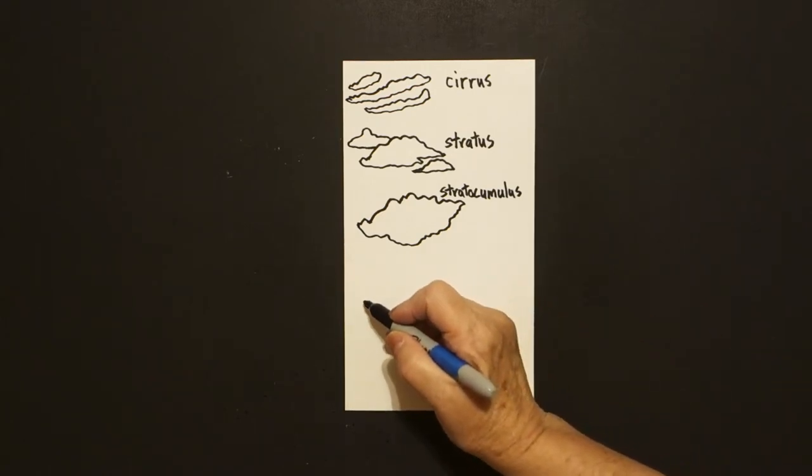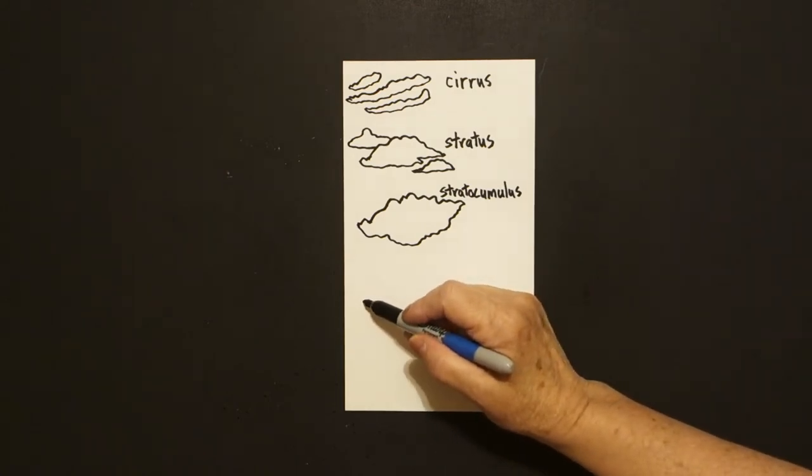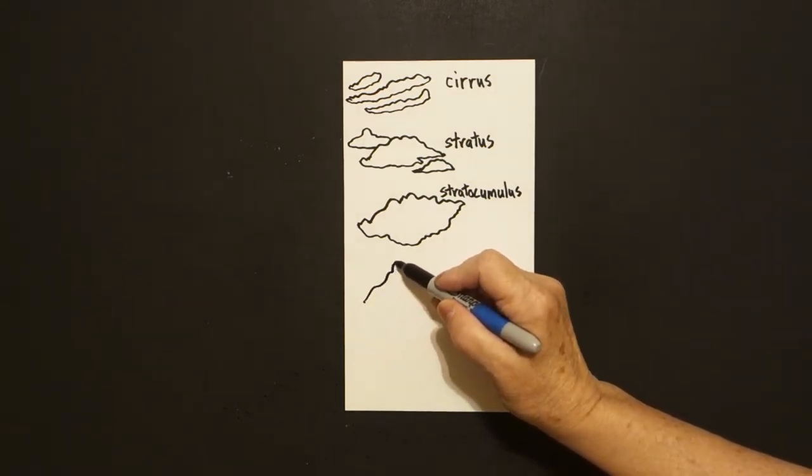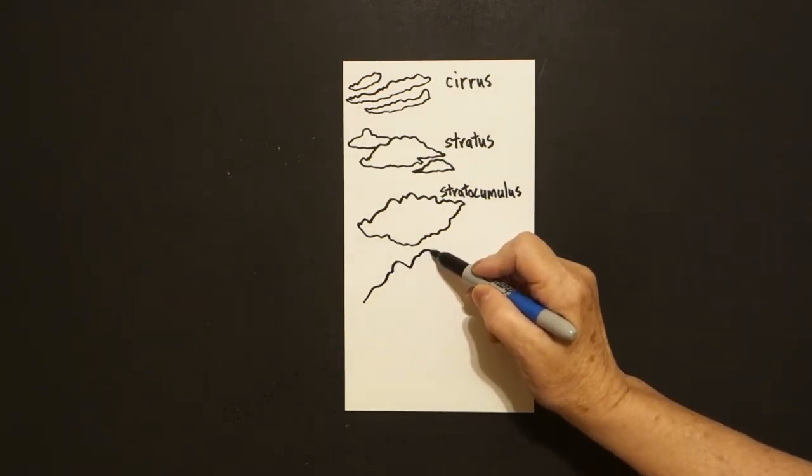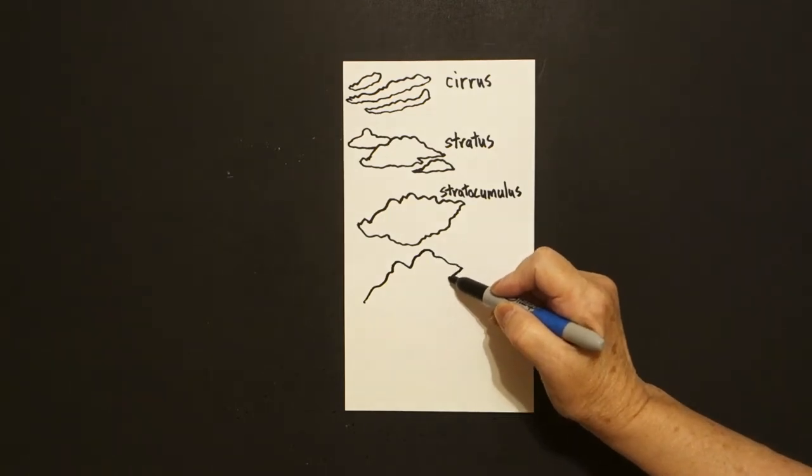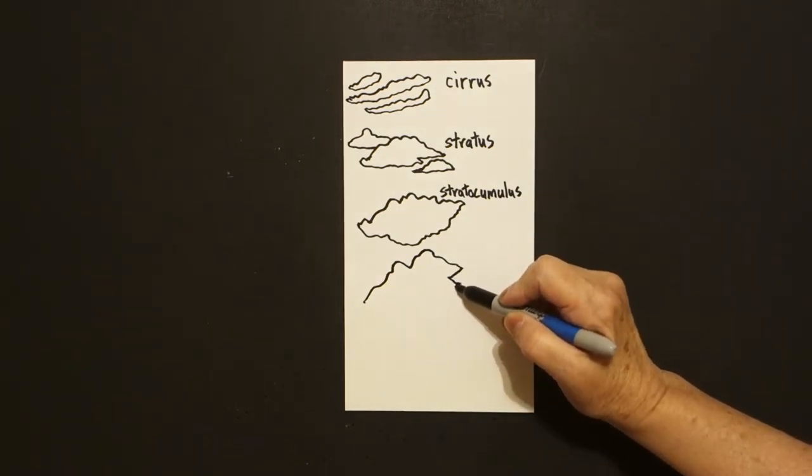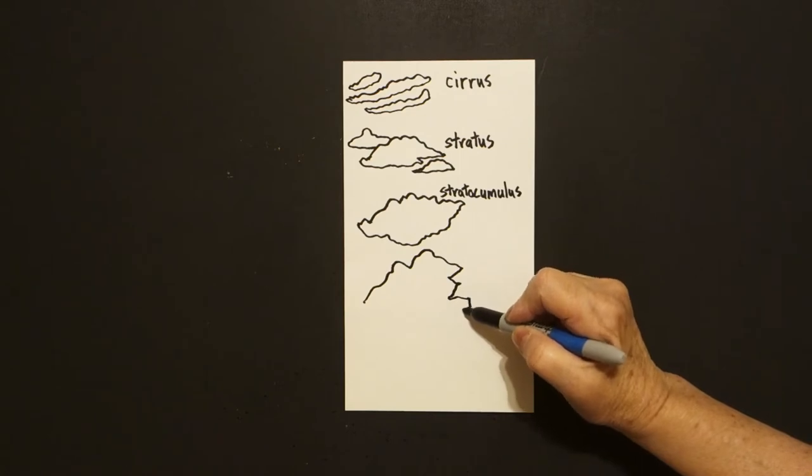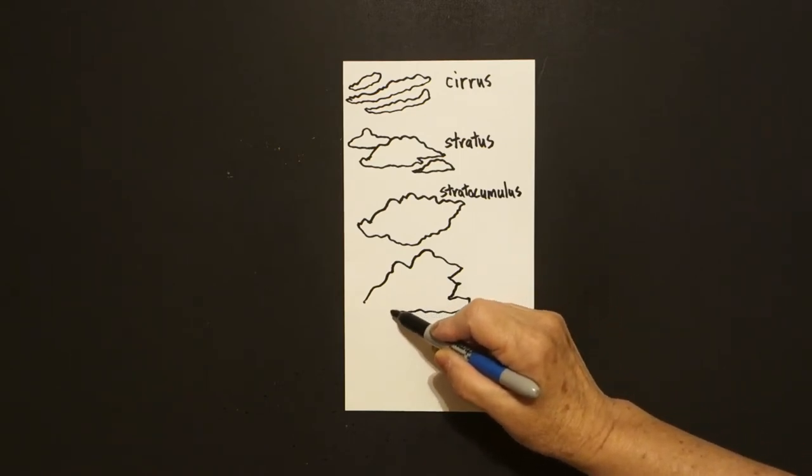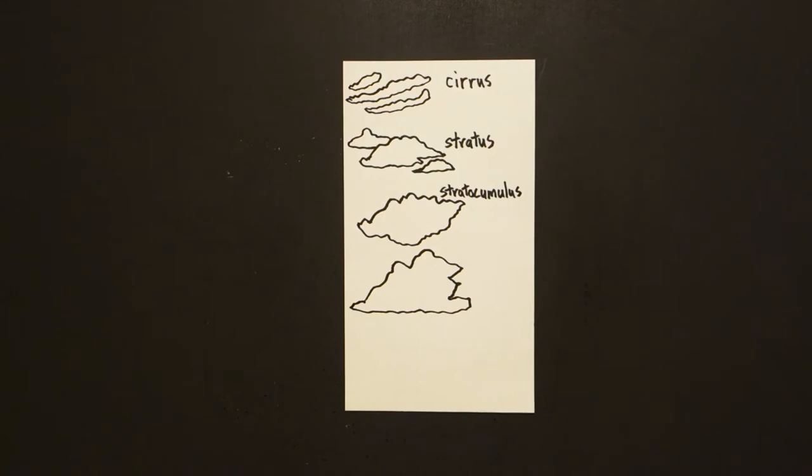Okay, down here, put a dot. We're going to draw curve line up, curve line up, out, in, out, down, back, curve line, wavy line and connect.